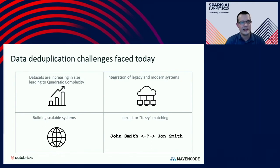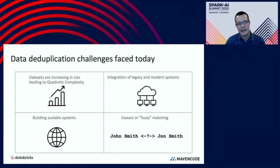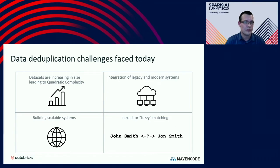Some of the challenges we face today when trying to deduplicate data from different sources: first, there's more and more data being generated by more people and devices, and the sheer size of datasets increases the complexity. Trying to combine legacy and more modernized IT systems — for example, combining on-premise systems with more modern cloud architecture — adds difficulty. And just building a scalable system to perform deduplication is challenging in itself. How do you look across millions of records in an efficient, scalable, affordable way that completes in a reasonable time?